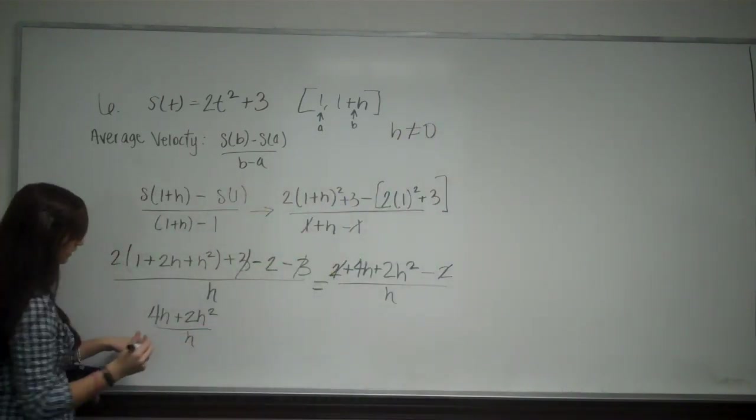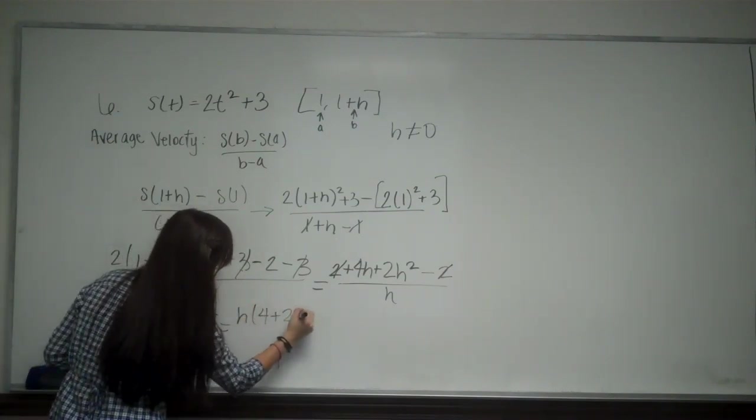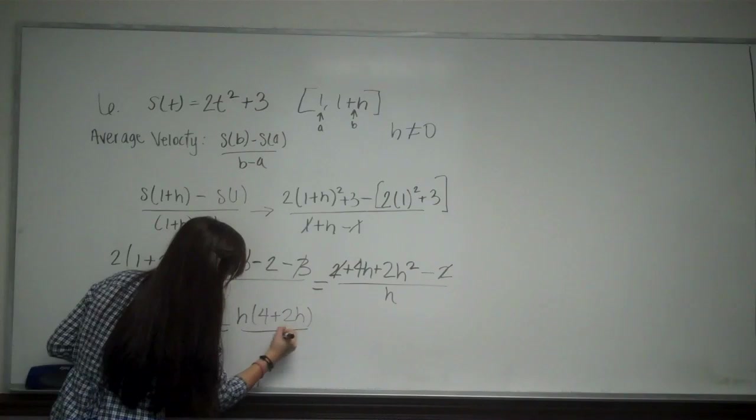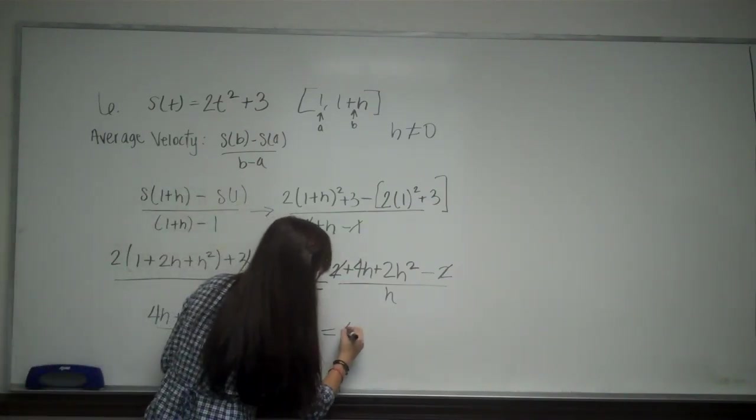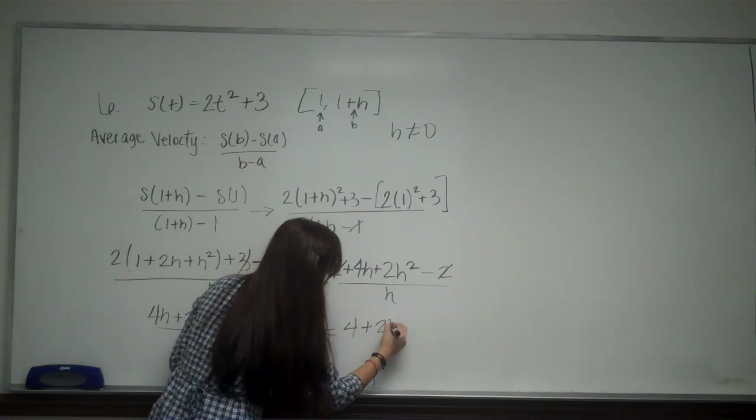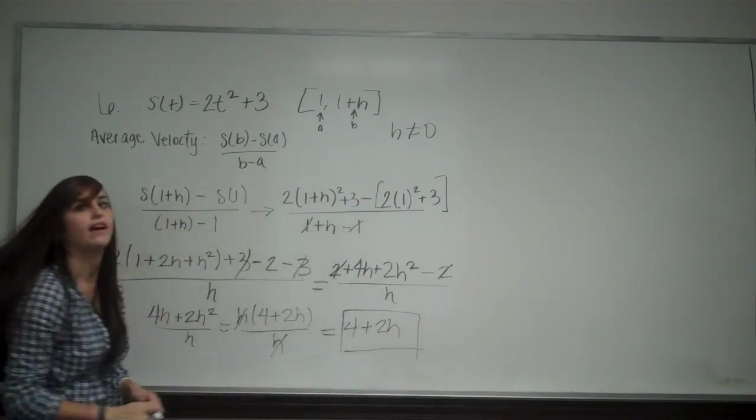So because of this, I can factor out an h and cancel it with the bottom h. So I'm left with 4 plus 2h. And that would be the equation for your average velocity.